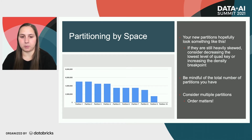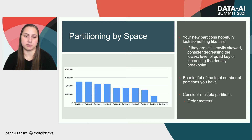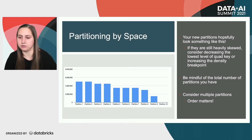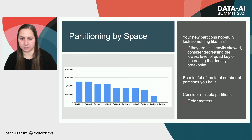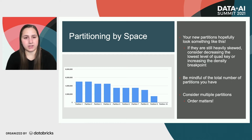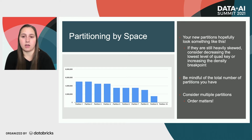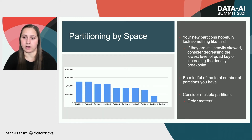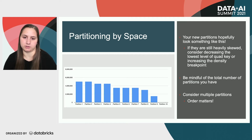If you graph the partitions, hopefully most of your data is spread out across most of the partitions. You may still have one, two, maybe 20 partitions that don't have a lot of data — maybe you have one data point on an island or something like that — but by and large, you should have a pretty level number of data in each partition. If your data is still heavily skewed, you could consider decreasing the lowest level of quad key resolution or increasing the density breakpoint. This comes back to knowing your data set and how it's spatially distributed.